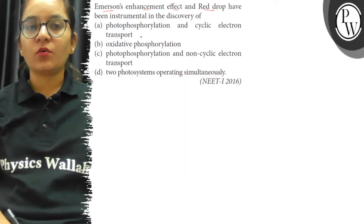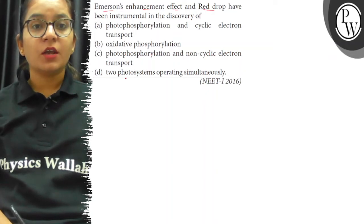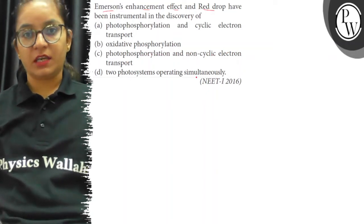A. Photophosphorylation and cyclic electron transport, B. Oxidative phosphorylation, C. Photophosphorylation and non-cyclic electron transport, D. Two photosystems operating simultaneously.